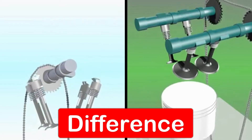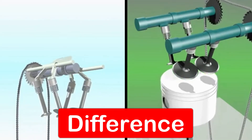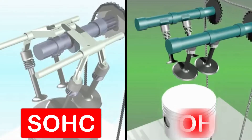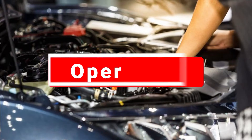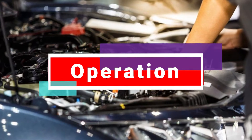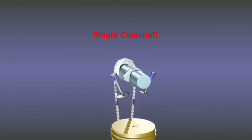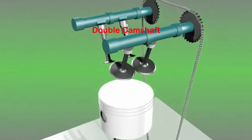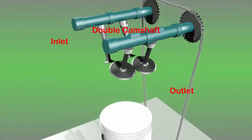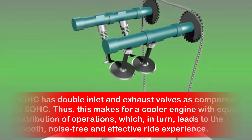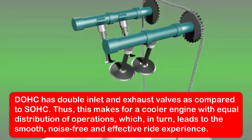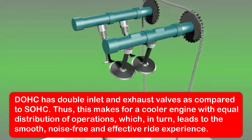Now let's go through the differences between them. Each type has its own features that make them unique and distinctive. The first difference is based on their operation. A SOSC is simply a single camshaft regulating both the inlet and outlet of gases. A DOSC is a double camshaft that has a dedicated setup for inlet and outlet of gases, which implies that a DOSC has double the inlet and exhaust valves compared to SOSC. This makes for a cooler engine with equal distribution of operations, leading to a smooth, noise-free, and effective ride experience.